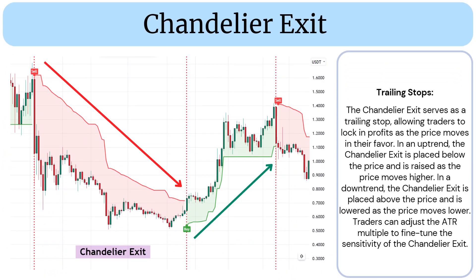Trailing stops: the Chandelier Exit serves as a trailing stop, allowing traders to lock in profits as the price moves in their favor. In an uptrend, the Chandelier Exit is placed below the price and is raised as the price moves higher. In a downtrend, it is placed above the price and lowered as the price moves lower.